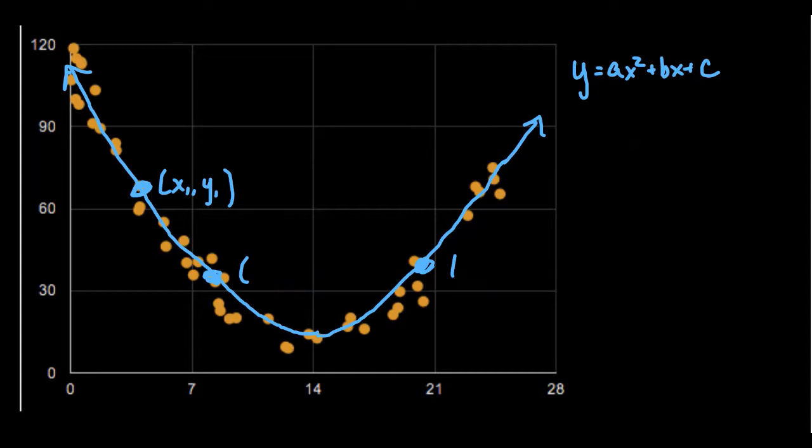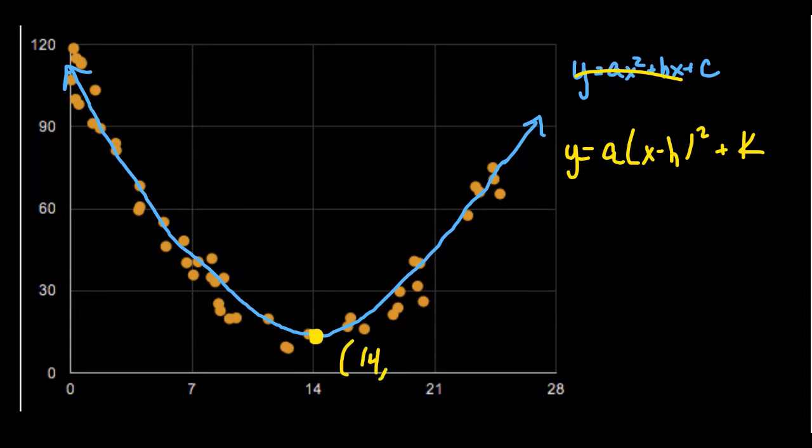Instead of using the standard quadratic form, which you see on the screen, instead, what I recommend is using the vertex form: y equals a times x minus h squared plus k. The vertex of the parabola holds a lot more information than just a random point. The vertex, we can see very quickly, it would be somewhere around here, which, again, we'll make a guess about 14 comma 15.